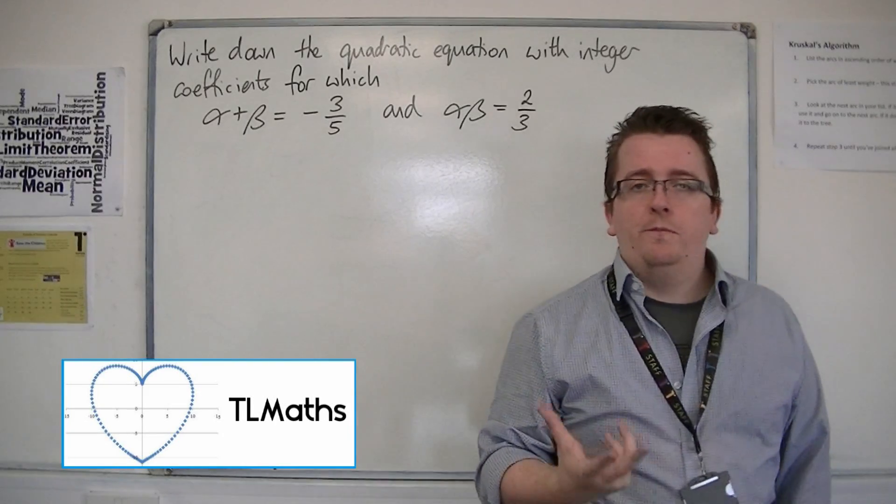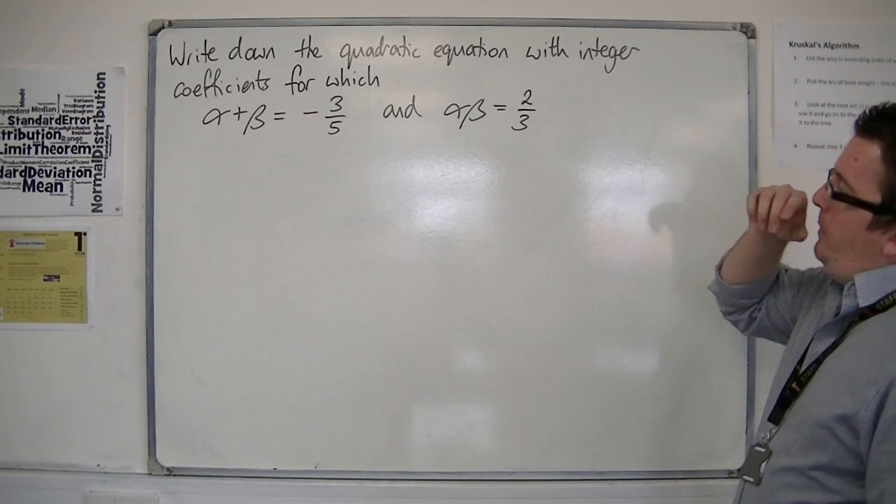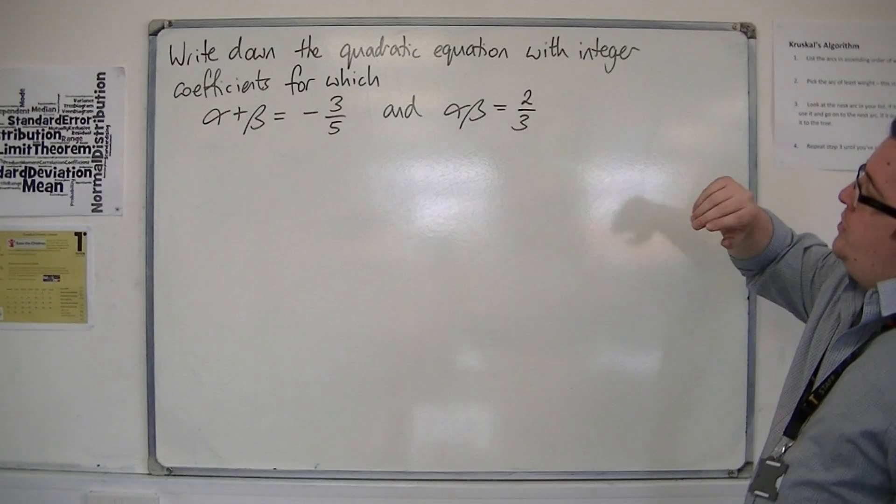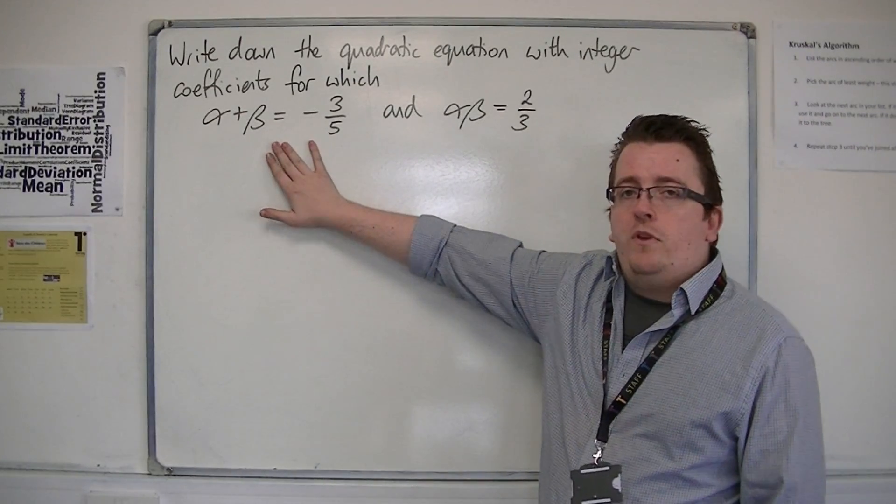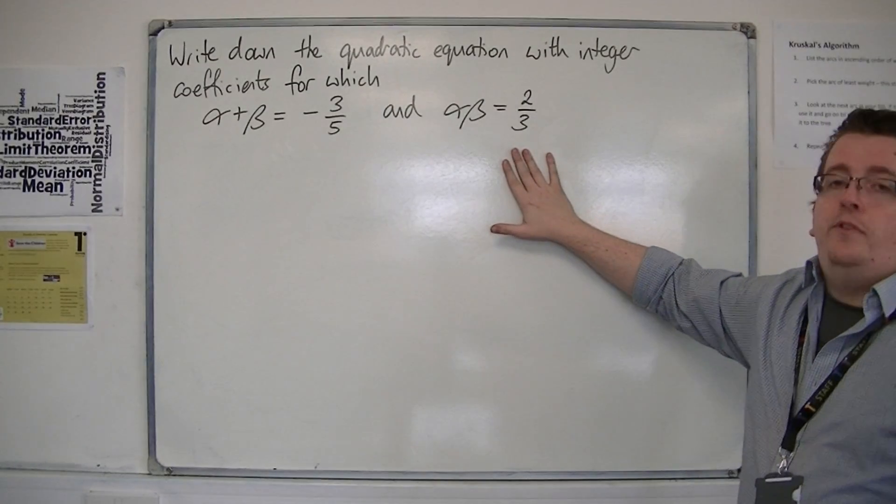Now let's look at the problem from the other way round. Say we want to write down the quadratic equation with integer coefficients for which the sum of the roots is -3/5 and the product of the roots is 2/3.